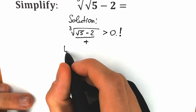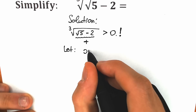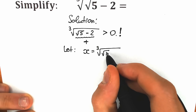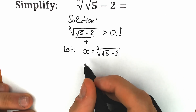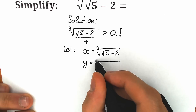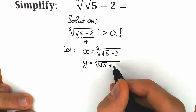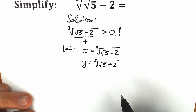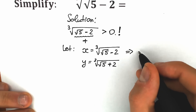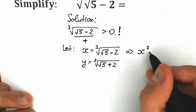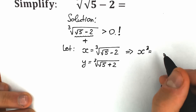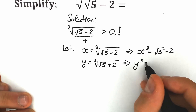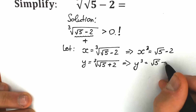So let's start with a really interesting substitution. Let x equal to the cube root of the square root of 5 minus 2 — this is what we need to find. And let y equal to the cube root of the square root of 5 plus 2. These are our two substitutions. From here we can raise both sides to the third power: x³ equals the square root of 5 minus 2, and y³ equals the square root of 5 plus 2.